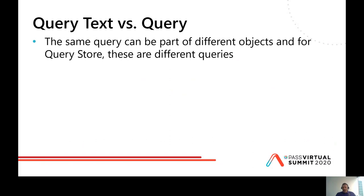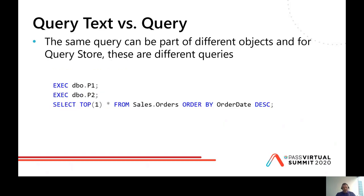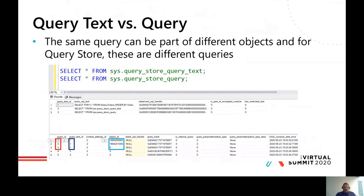We distinguish between query text and query. The same query can be part of different database objects, and for Query Store these are different queries. Consider this example: a single query — SELECT TOP 1 FROM sales order ORDER BY order date — can be part of two stored procedures P1 and P2, and also executed as an ad hoc query. In sys.query_store_query_text we see a single query text ID, but in sys.query_store_query we find three different query IDs — with different object IDs for the two stored procedures, and object ID 0 indicating an ad hoc query.